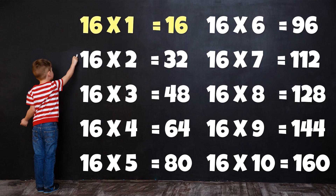Table of 16: 16 times 1 is 16, 16 times 2 is 32, 16 times 3 is 48, 16 times 4 is 64, 16 times 5 is 80, 16 times 6 is 96, 16 times 7 is 112, 16 times 8 is 128, 16 times 9 is 144, 16 times 10 is 160.